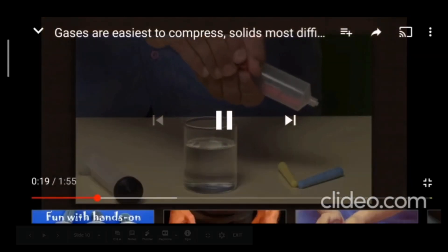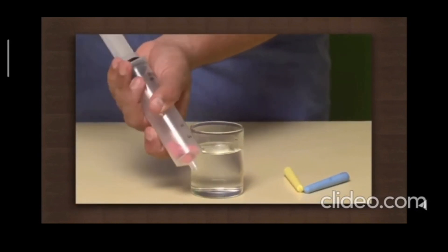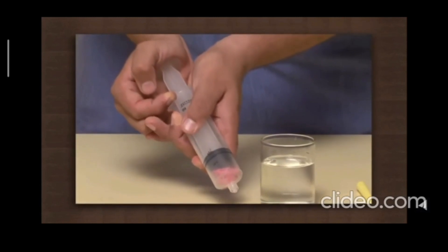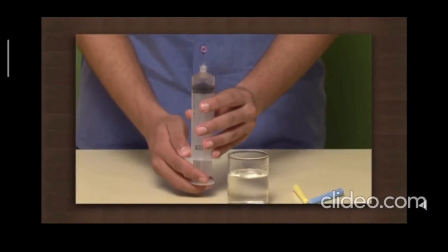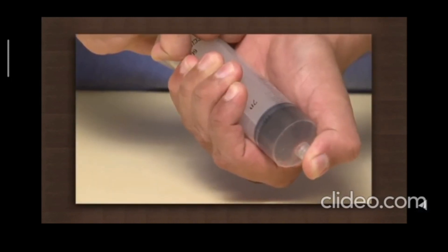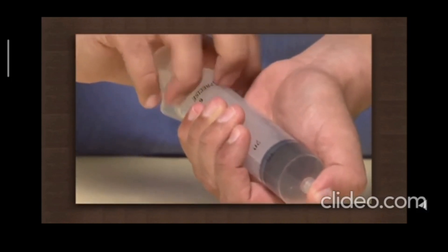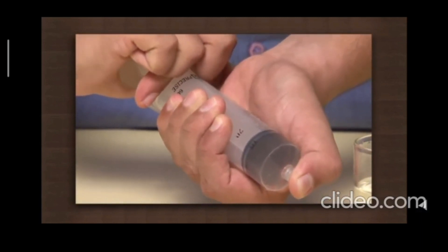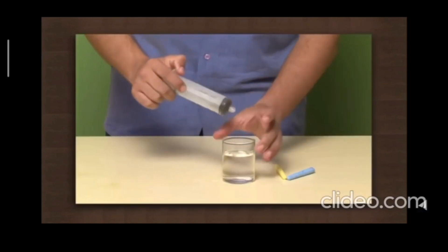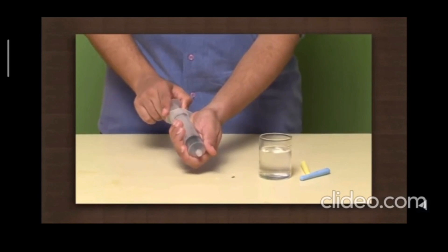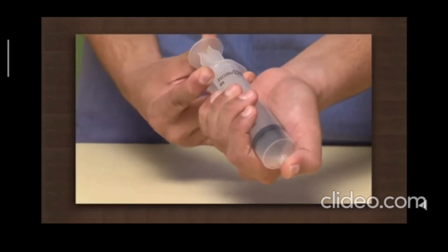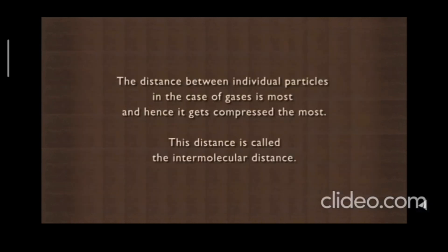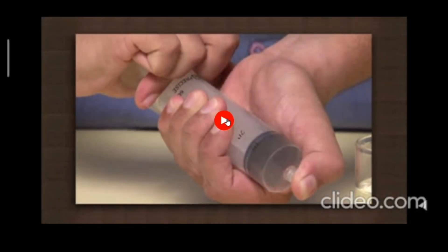In this experiment comparing compressibility: solids are incompressible — if you try to compress chalk or its powdered form, it will not be compressed. Next, when water is taken in a syringe with the outlet sealed, even water cannot be easily compressed. Even liquids cannot be easily compressed. But when air is filled in the syringe, the piston can be easily brought down. The distance between individual particles in gases is greatest, hence gases get compressed the most. This distance is called intermolecular space.